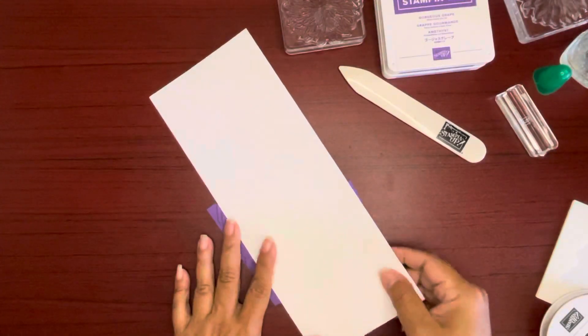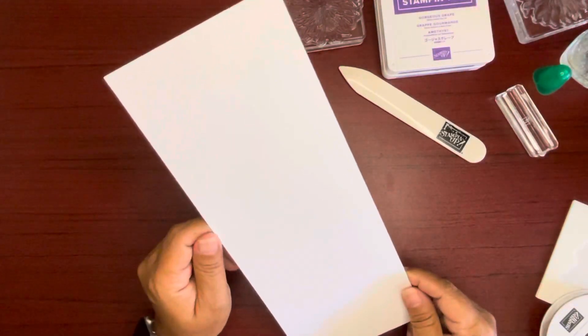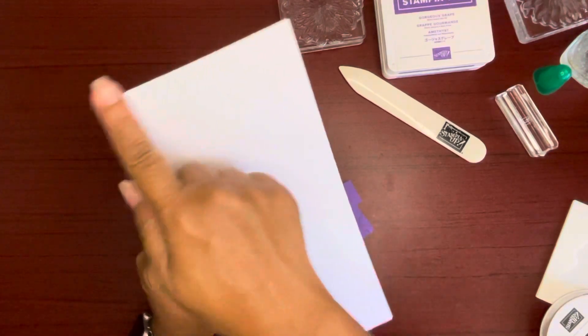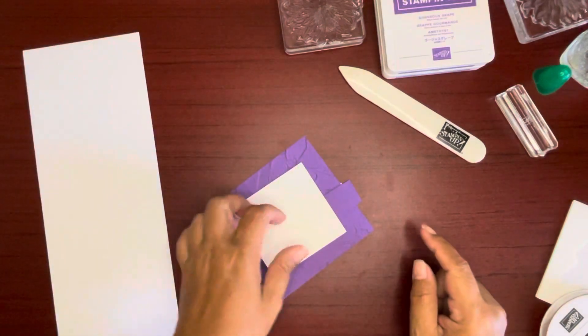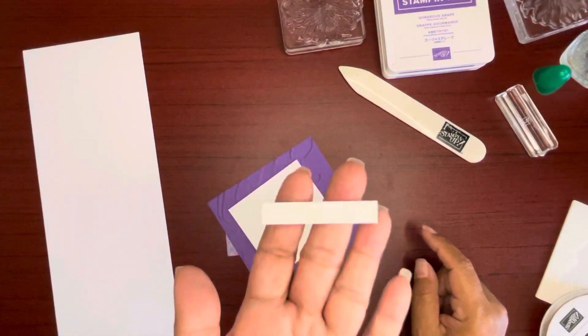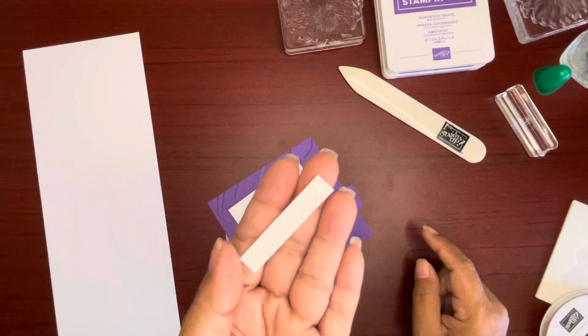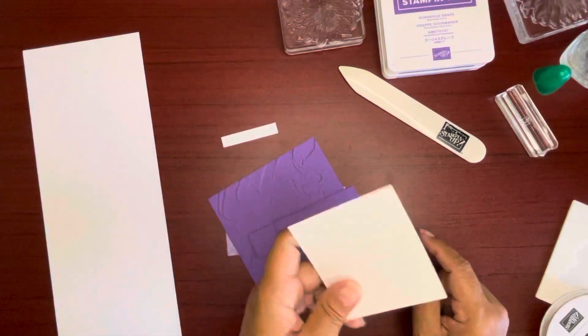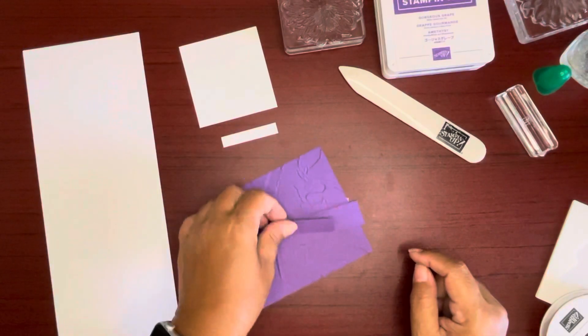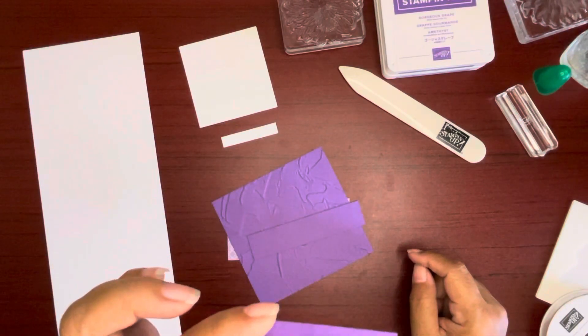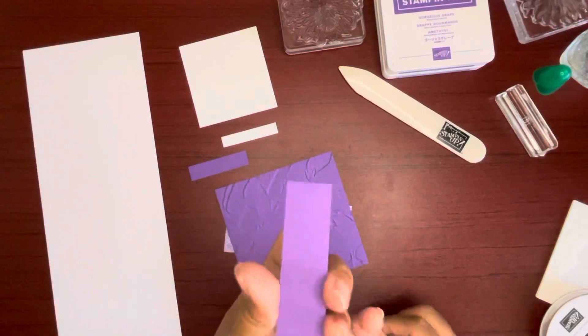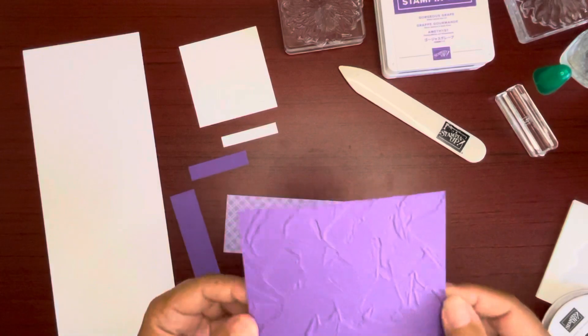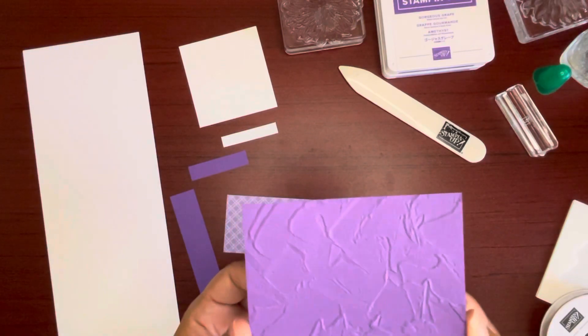Free with a qualifying order using thick basic white cardstock. This here is cut at four and a quarter by 11, scored at four and a half and five and a half. This little piece for the sentiment is three eighths by two inches. This here is three by two and seven eighths. This here is a half inch by two and an eighth for layering. This here seven eighths by four and one eighth. And this piece here is four and one eighth by four and three eighths.